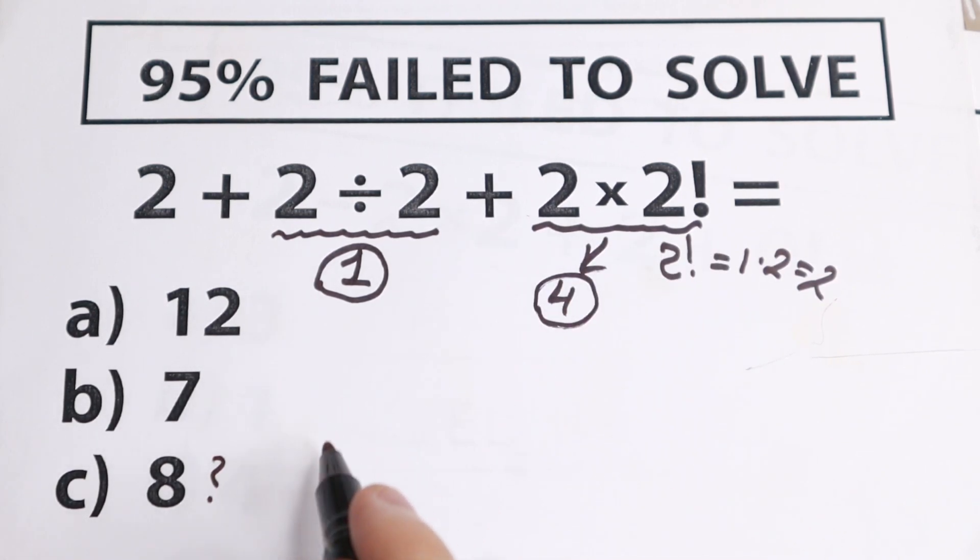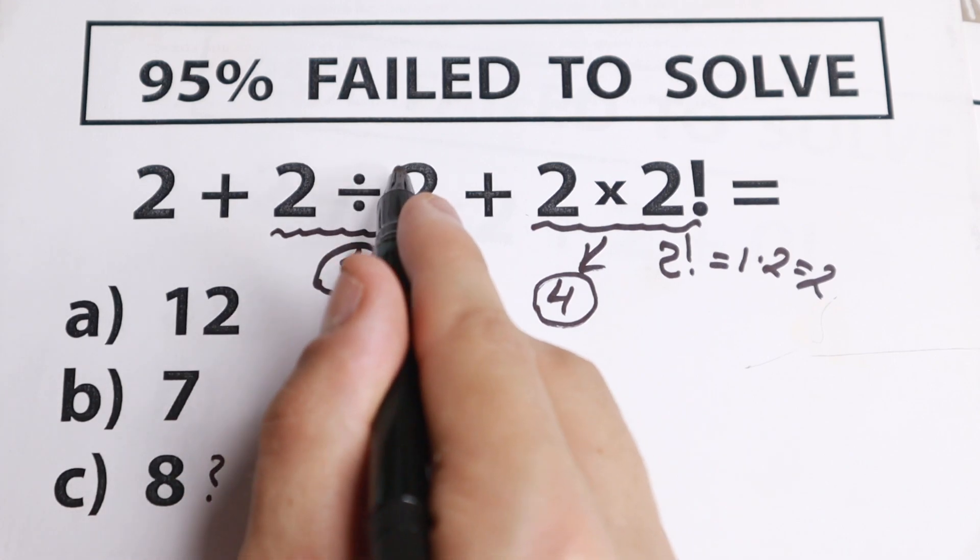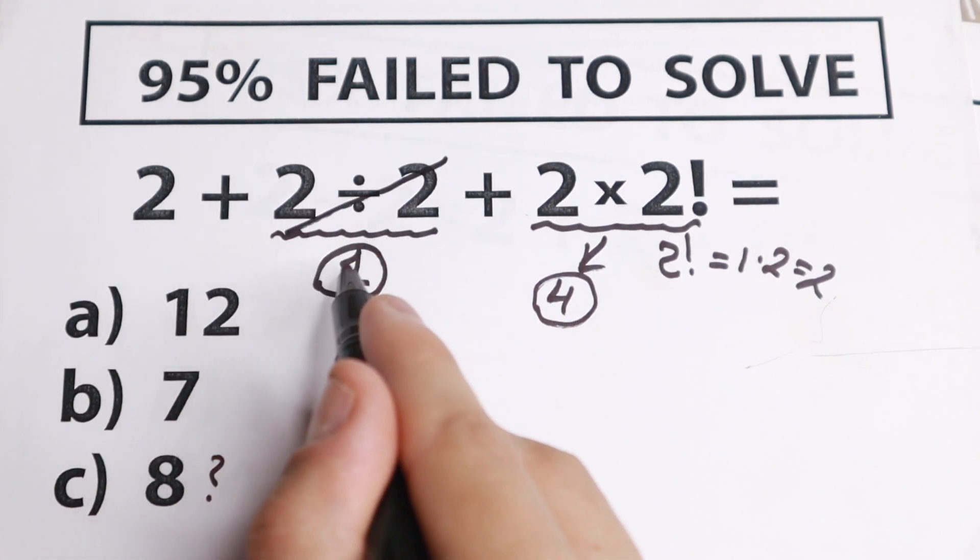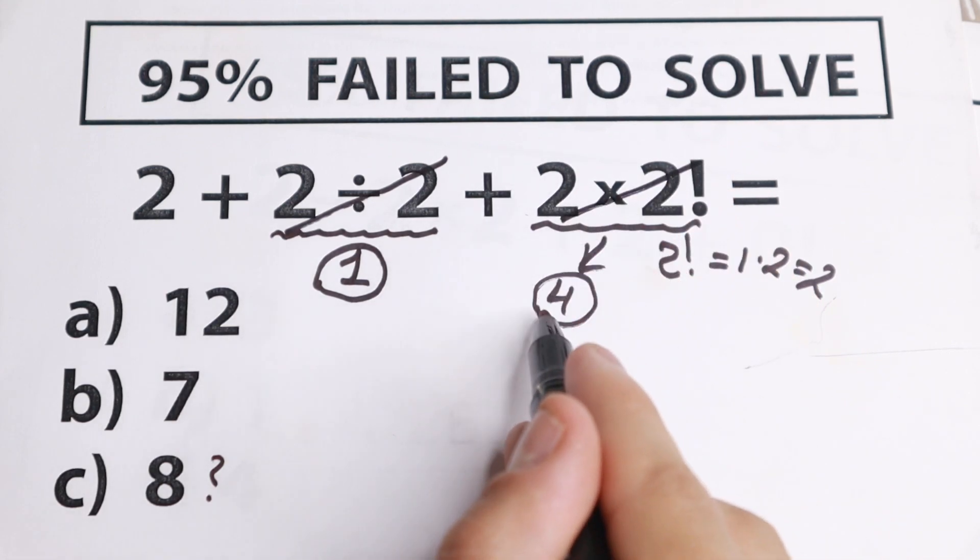So as you can see, we need to start with division and multiplication. And right now we can easily cancel it. Of course, in our minds, but we can easily cancel this and have only 1. Right here cancel and we have only 4.